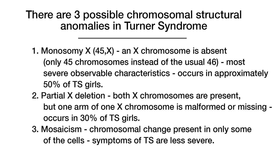There are three possible chromosomal structural anomalies in Turner Syndrome. First is monosomy X, or 45X. An X chromosome is absent — there are only 45 chromosomes instead of the usual 46. This creates the most severe observable characteristics and occurs in approximately 50% of TS girls.